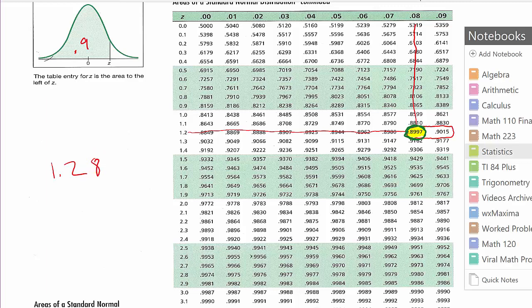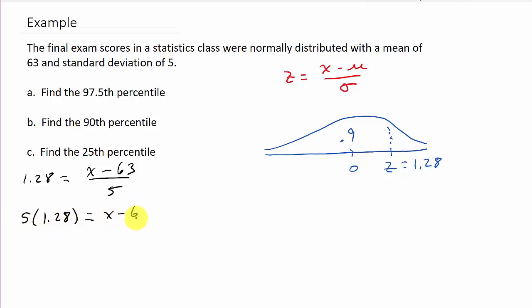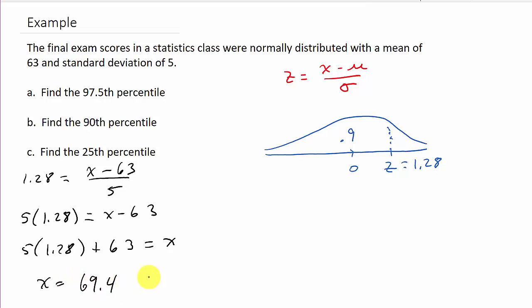With z equal to 1.28, we plug in: 1.28 equals x minus 63 over 5. Multiplying by 5: 5 times 1.28 equals x minus 63. Then 5 times 1.28 plus 63 equals x, which gives x equals 69.4. So 69.4 is the 90th percentile.